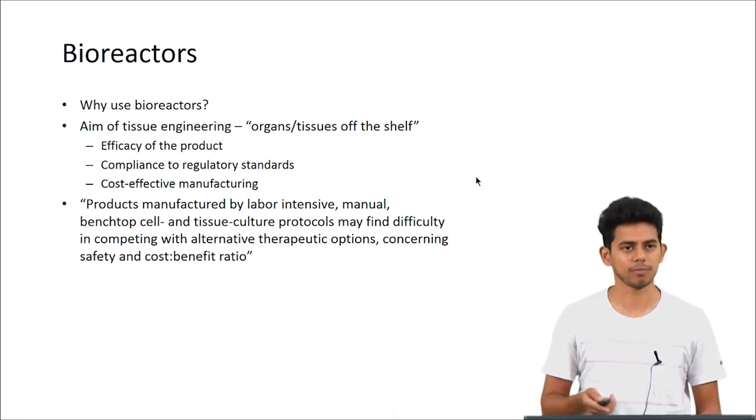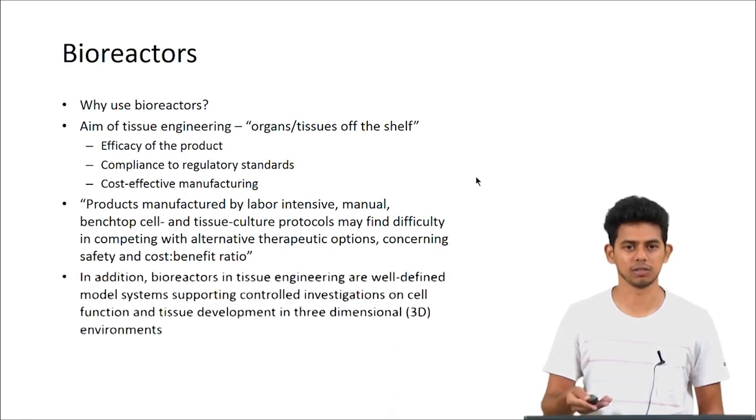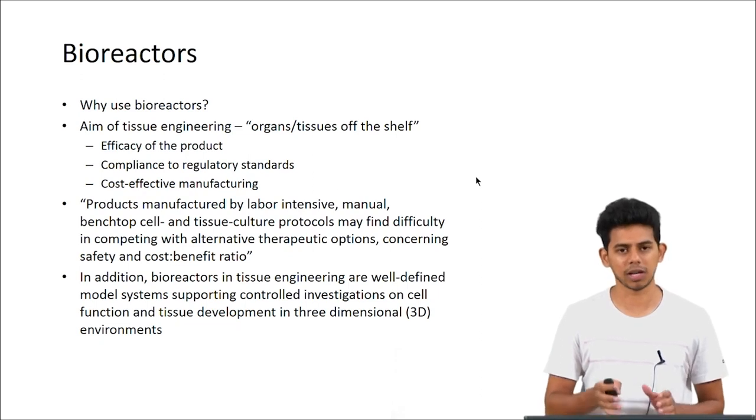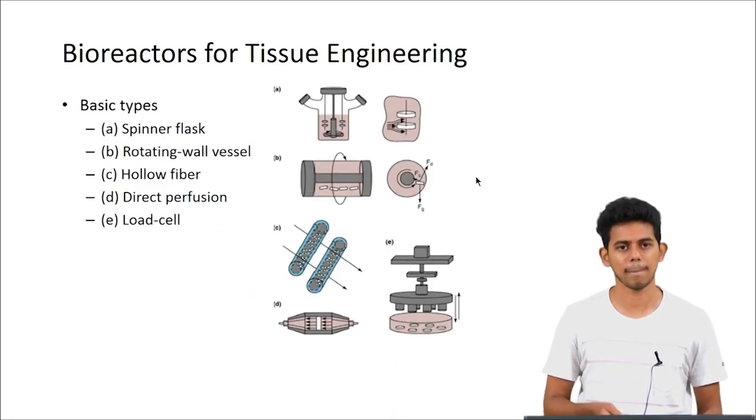Products manufactured on the tabletop in a lab might be useful to study how you can grow these organs, but to produce them at large scale you would need something like a bioreactor. In addition, such a controlled environment like a bioreactor ensures that we can study in detail how the tissue development happens by controlling all other parameters and changing whatever we require.